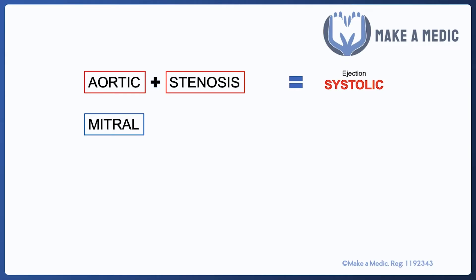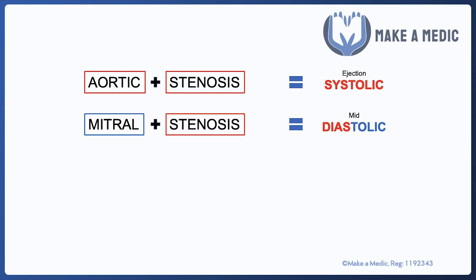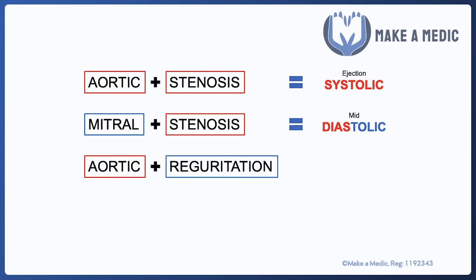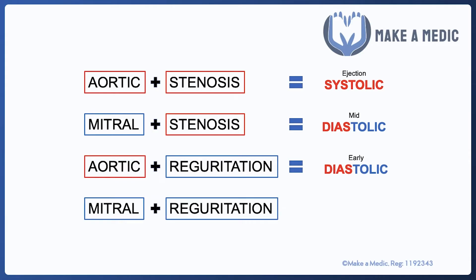If you change one of those words — so if it's mitral stenosis — it becomes a diastolic murmur. Similarly, if you turn it into aortic regurgitation, that is also a diastolic murmur. And if you change both words into mitral regurgitation, it is a systolic murmur. There are slight variations in terms of exactly what type of systolic or diastolic murmur it is, but that's something you can add on once you've got this algorithm fixed in your head. I always found this useful when presenting a case in an OSCE to figure out exactly what type of murmur I heard and which valve abnormality it likely corresponds with.